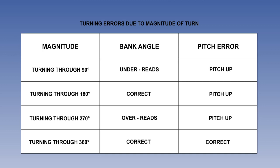To summarise turning error: any error effect will depend on the magnitude of the turn, and the magnitude of the error will depend on the speed and rate of turn. The error will apply equally to a turn in either direction.